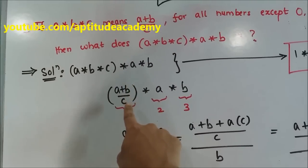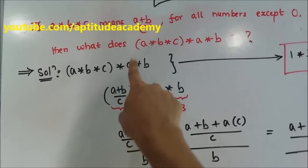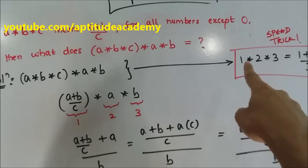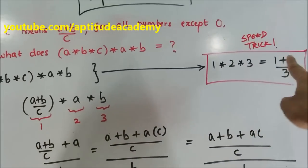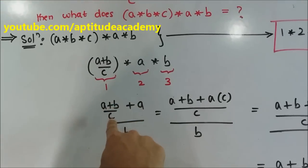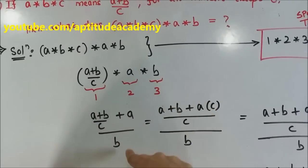A plus B divided by C will be your first term, A will be your second term, and B will be your third term. You know that 1 into 2 into 3 will give you 1 plus 2 by 3. So 1 plus 2, that is A plus B by C, plus A, divided by the third term, that is B.